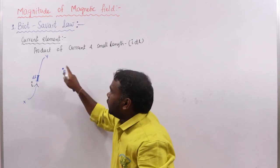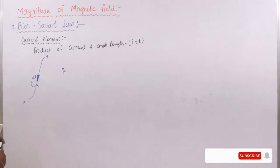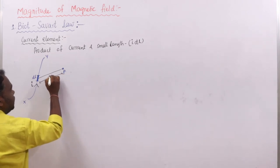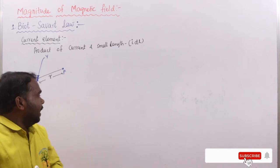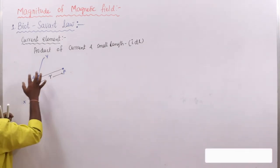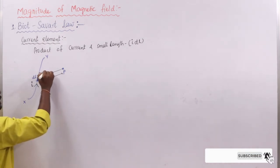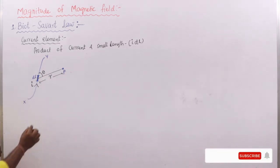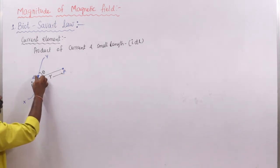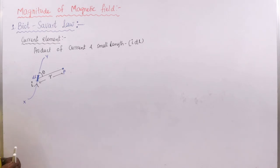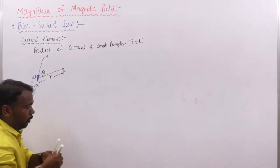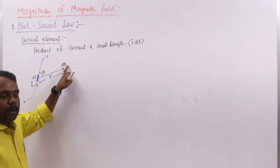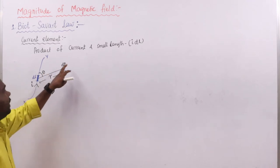Due to this current element IDL, we need to determine the magnetic field at point P. Point P is at a small distance r from the element dL. The angle between dL and r is taken as theta. Since the element dL is small, the corresponding magnetic field at P is also a small value, denoted as dB.